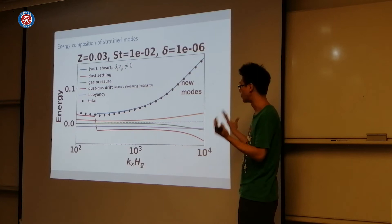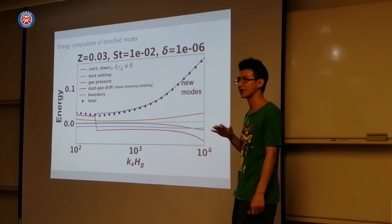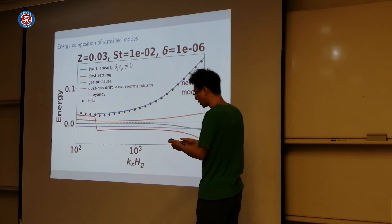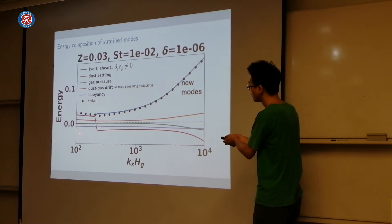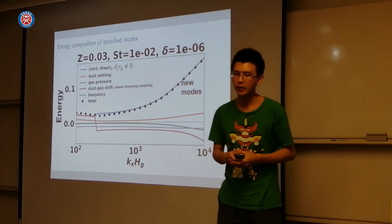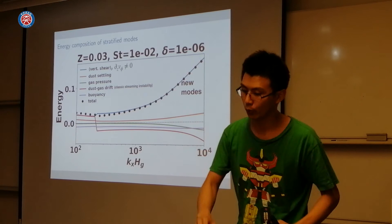This is actually a little different from the classic streaming instability studied prior to this work. The classic streaming instability is driven by the fact that dust and gas move at different speeds. That does happen at longer wavelengths, but as I go to smaller length scales with larger kx, most of my modes are actually dominated by this new source of energy — vertical shear — which hasn't really been explored before, at least in this context.